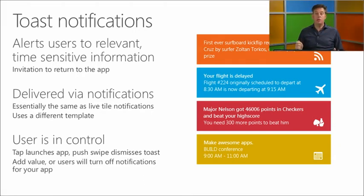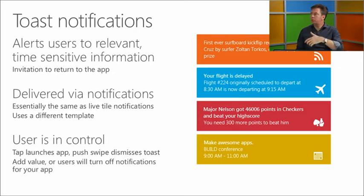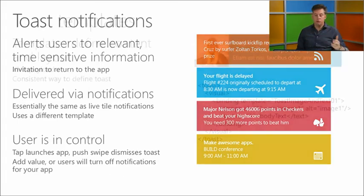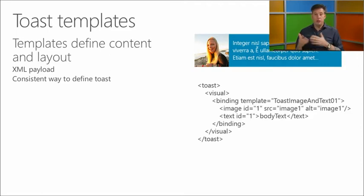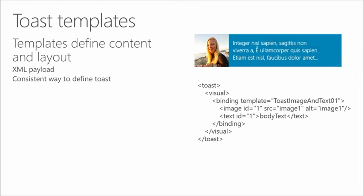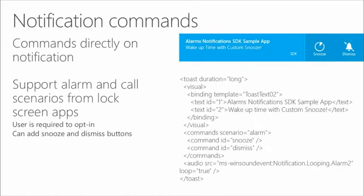Notifications shouldn't be the main model of your app — they should be an addition to help users. As with tiles, there are toast templates that define the layout; you provide the content for that. Notification commands like we saw with the alarms app — there's only one alarm app visible on your lock screen, and the user will decide if your app is the best alarm app for their situation.